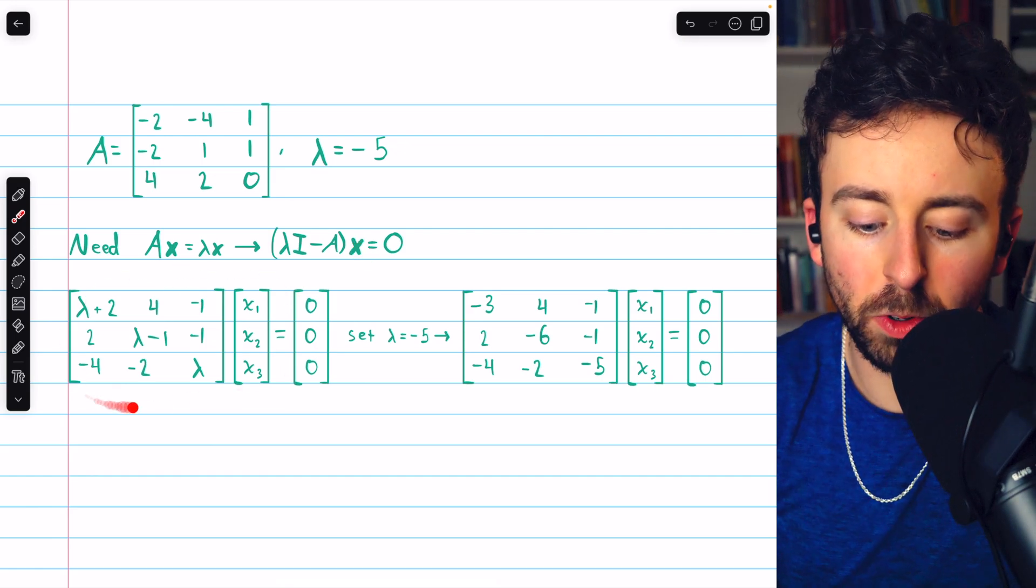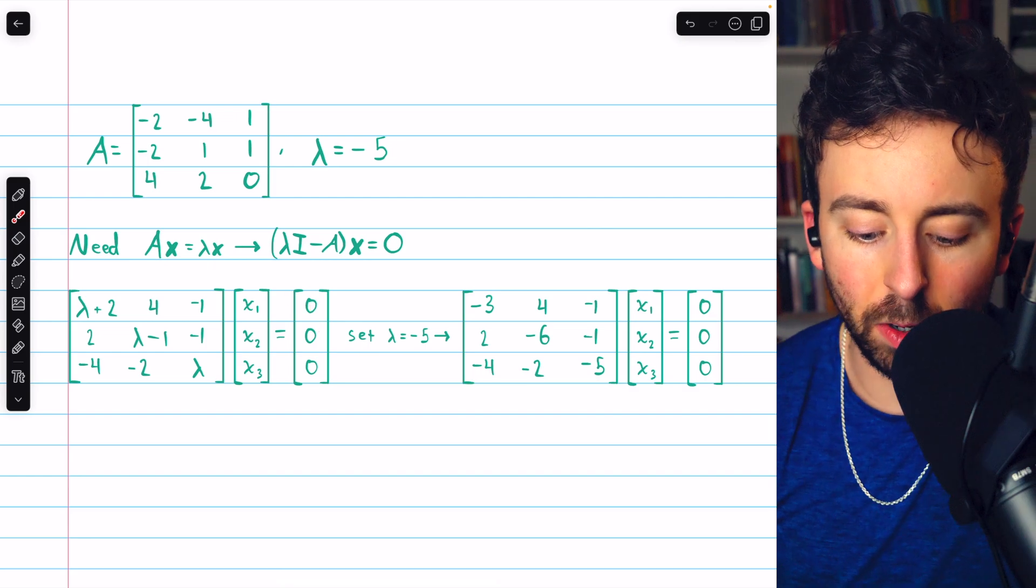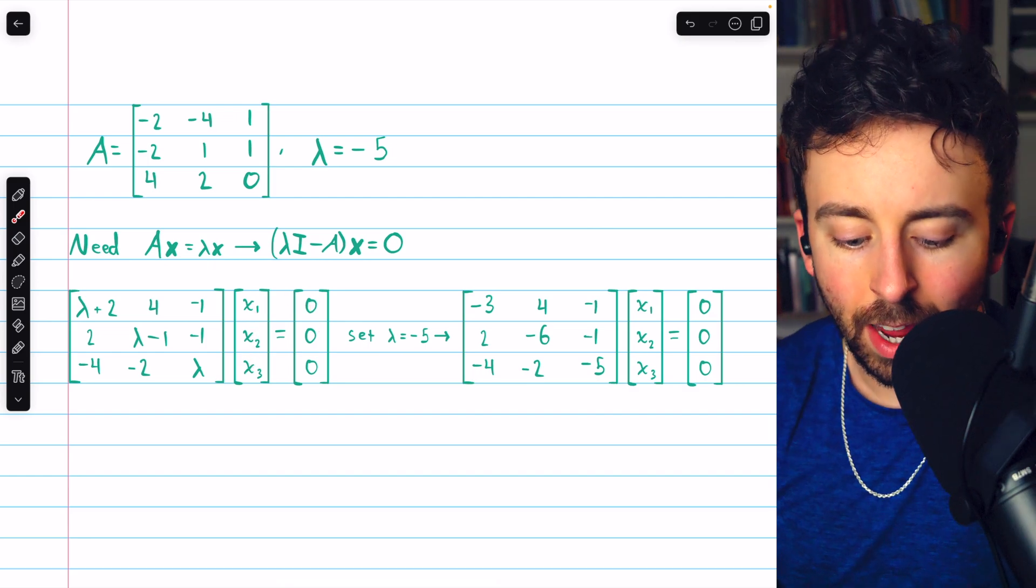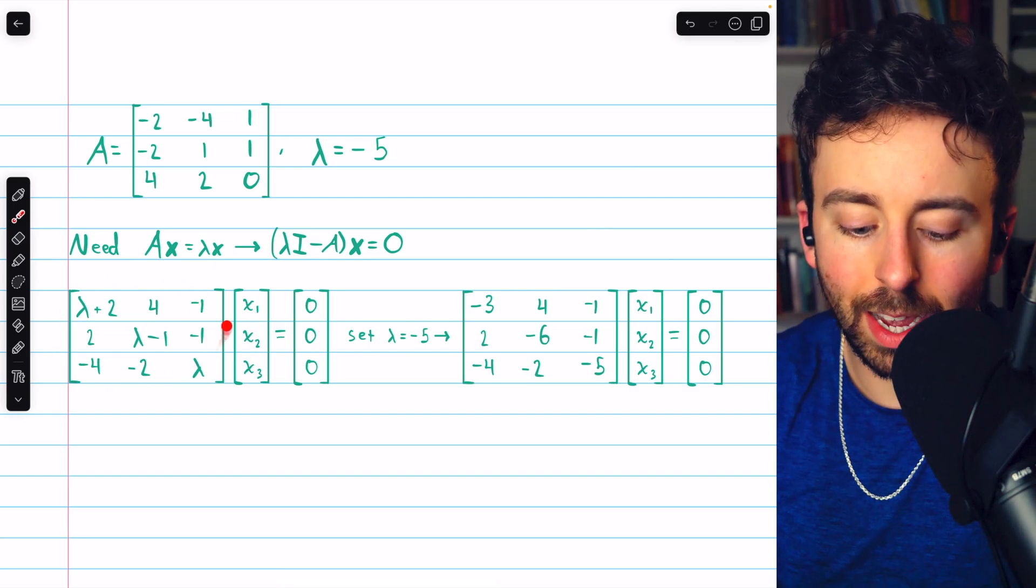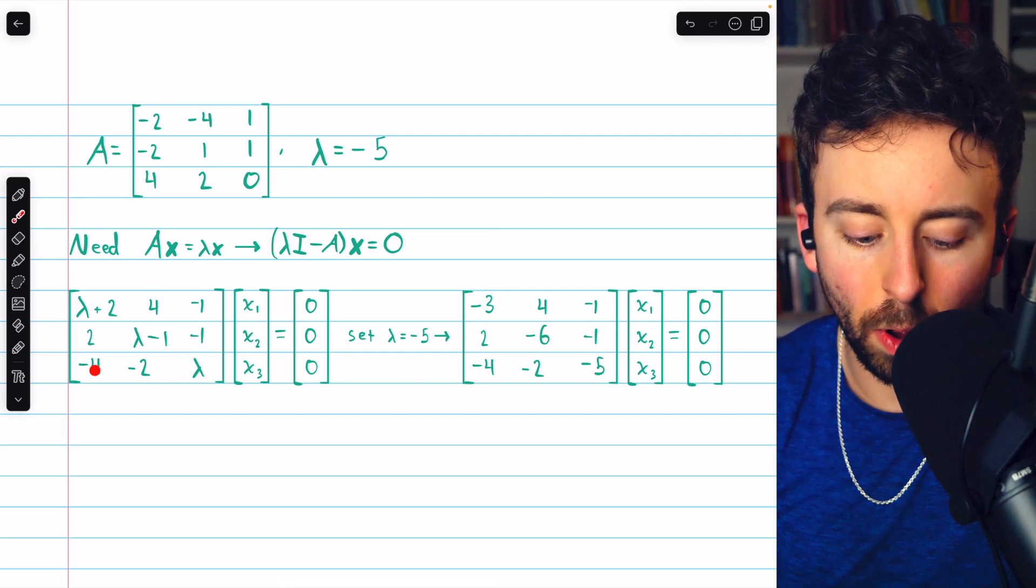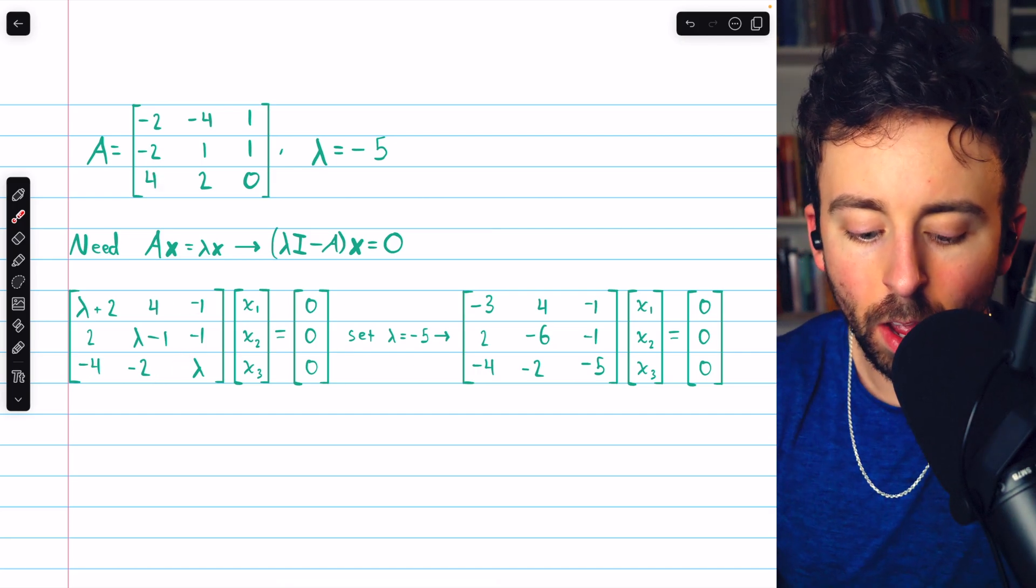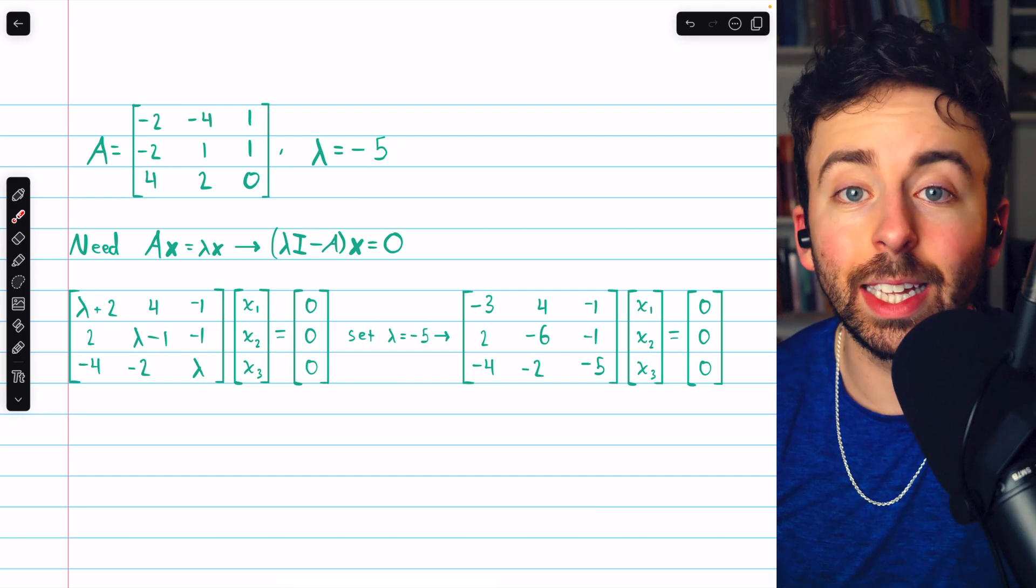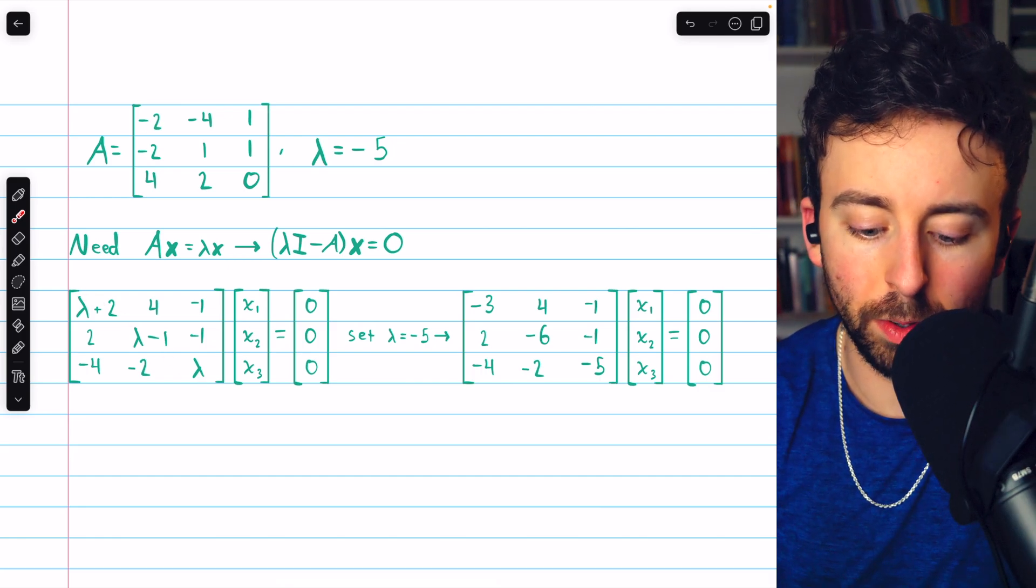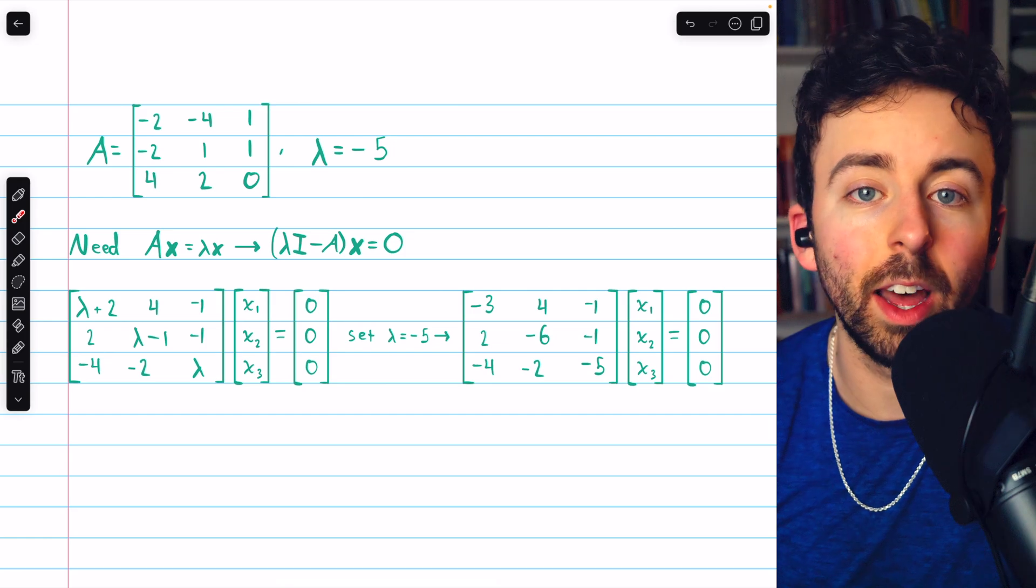And that gives us this homogeneous linear system. Here's that solution vector x, and then here's lambda times the identity minus A. So off the diagonal, we have the negatives of the entries of A. On the diagonal, we have lambda minus whatever the corresponding entry of A is.